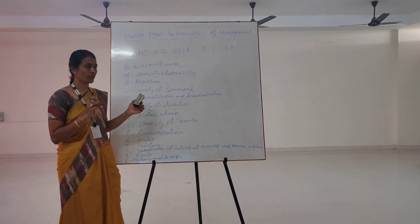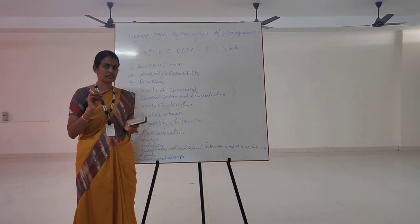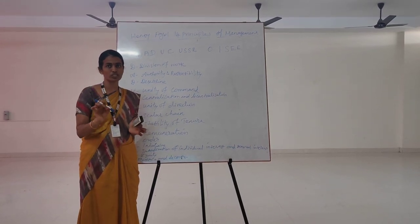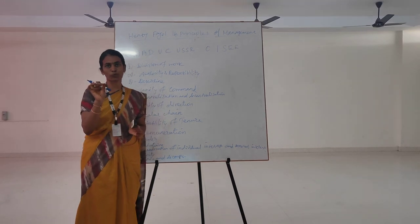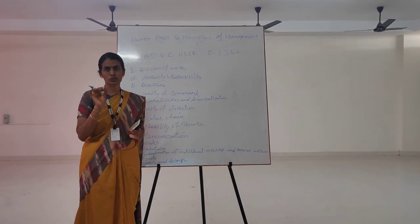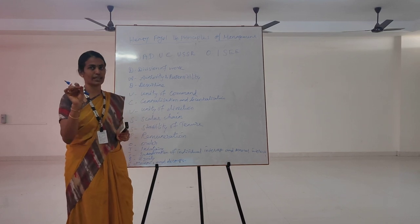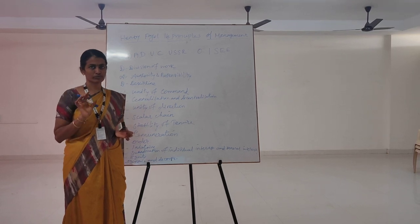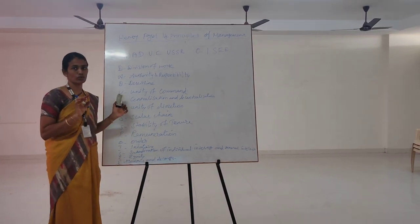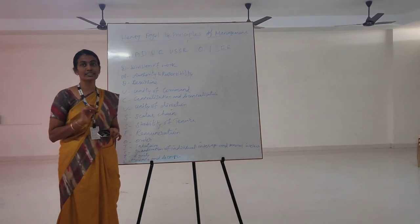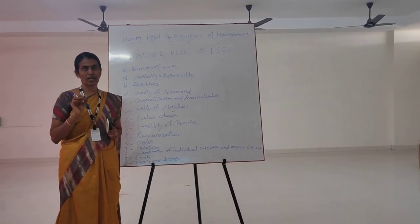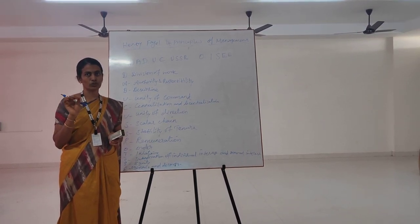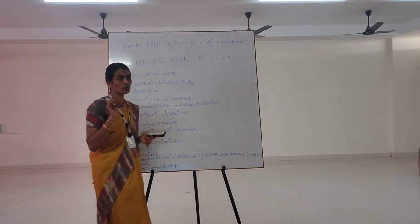Official authority comes from managerial positions. Personal authority comes from values like intelligence, experience, moral character, and force of service. All work is open to authority without responsibility. Responsibility is about response to behavior. Responsibility without authority makes people less effective. Work must balance both. There are two types of responsibility.